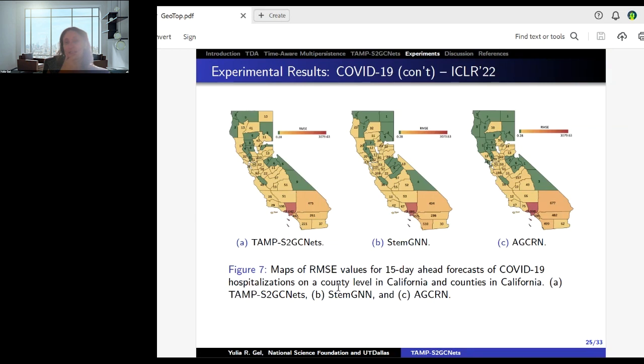These results are maps for COVID-19 hospitalizations. You see that in some of the counties, we have similar type of performance across all models. But some areas, particularly ones with sparse locations, our model performs better than more traditional STGCN and AG-CRN model.